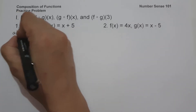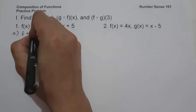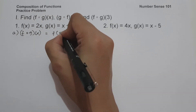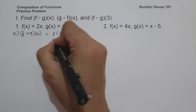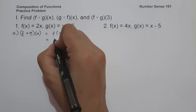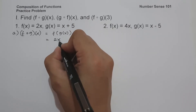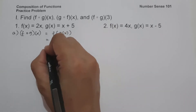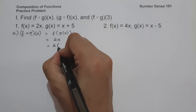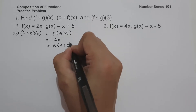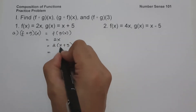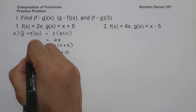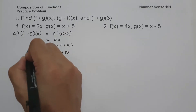So let us have f circle of g of x, and that is f of g of x. The value of f is 2x, and the value of x is g of x, and g of x is x plus 5. So this will be 2 multiplied by x plus 5. That gives us 2 times x is 2x, and 2 times 5 is 10. So this will be 2x plus 10, and this is the value of f circle of g of x.